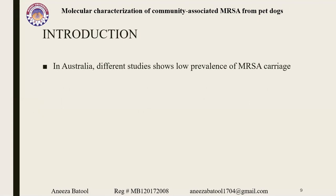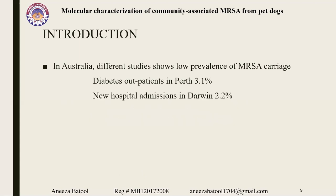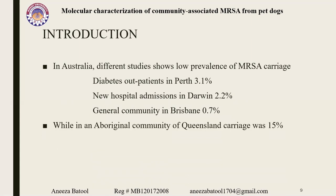In Australia, different studies show the prevalence of MRSA carriage. Some areas show low prevalence: Perth at 3.1%, Darwin at 2.2%, and Brisbane at 0.7%. But some areas show high prevalence, like Queensland, at about 7–15%, mostly in Aboriginal peoples — the indigenous inhabitants of Australia.